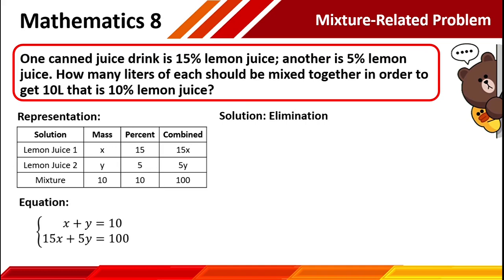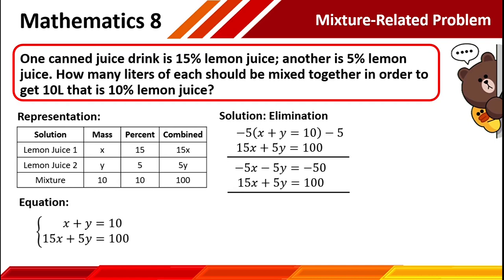This problem can be solved using elimination. We have our original equations: x plus y equals 10, and 15x plus 5y equals 100. To eliminate a variable, we can multiply negative 5 on the first equation, giving us negative 5x minus 5y equals negative 50. We distribute negative 5 on all the factors inside the parentheses. We can now cancel variable y because negative 5y plus 5y equals 0. Adding the remaining factors: negative 5x plus 15x gives 10x, and negative 50 plus 100 gives 50. To find the value of x, we divide both sides by 10, so x is equal to 5.